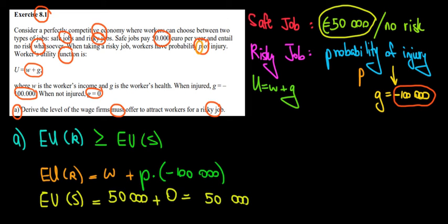Now let's put our inequality over here. The expected utility of the risky job must be at least the same as this one. So this expression that we just found, W minus 100,000 times P, must be greater than or equal to 50,000.